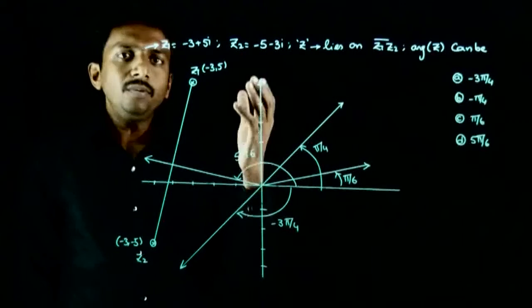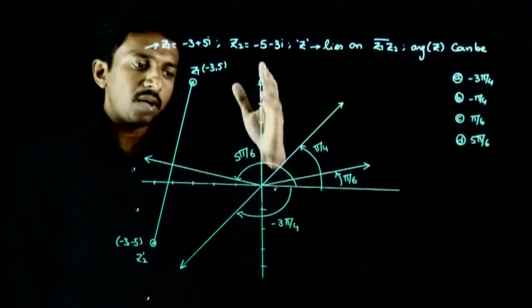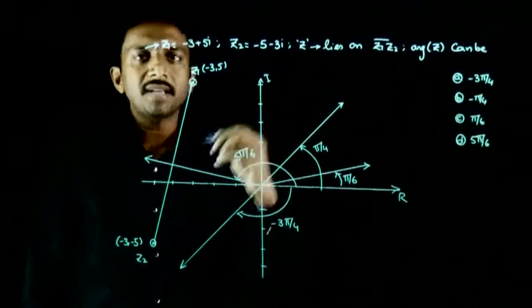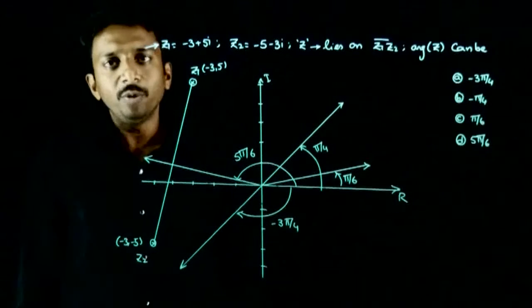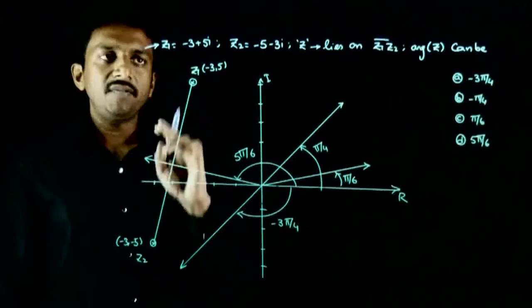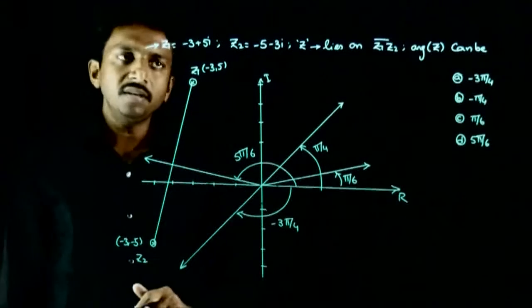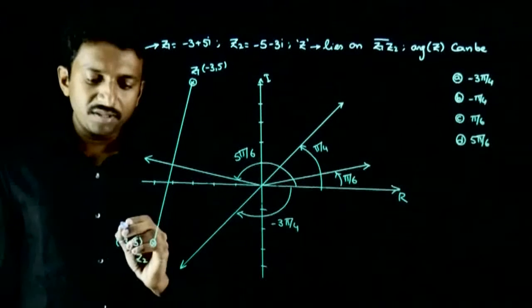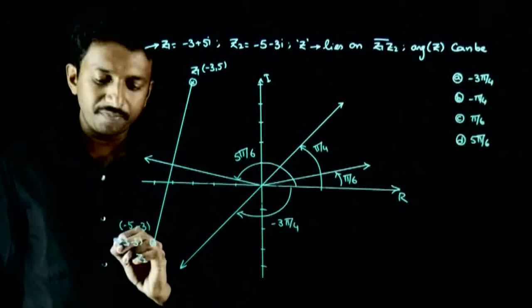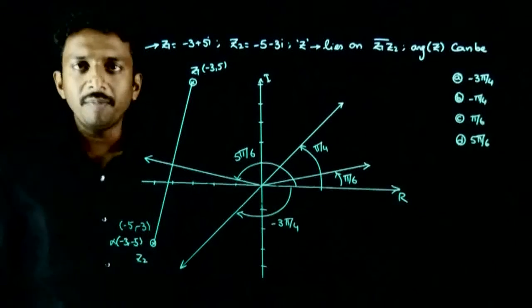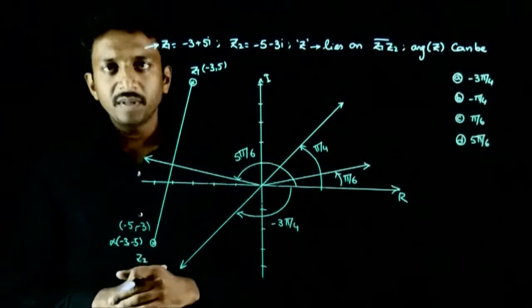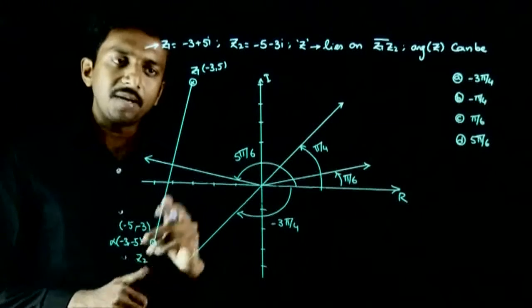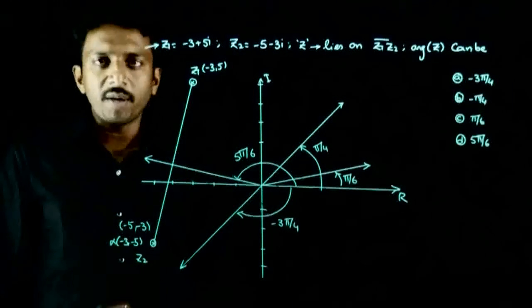Let us analyze this question on the Argand plane. Draw the real axis and imaginary axis. On this Argand plane, plot z1 and z2. z1 is represented by (-3, 5) and z2 is represented by (-5, -3). These are the two points z1 and z2. Join z1 and z2. This is the line segment that you get, and z is any point on this line segment.